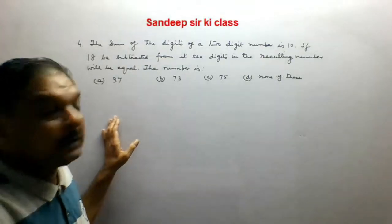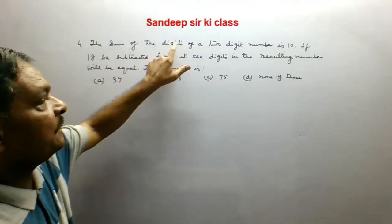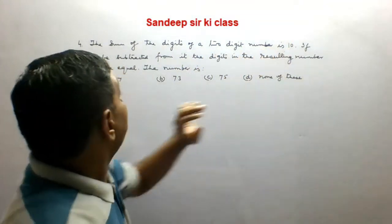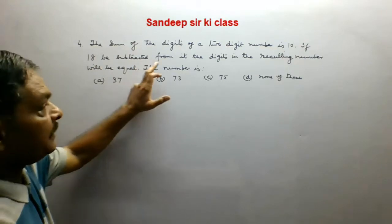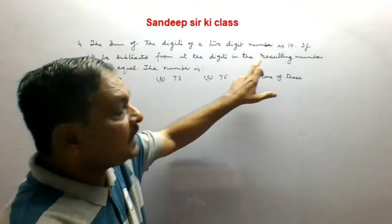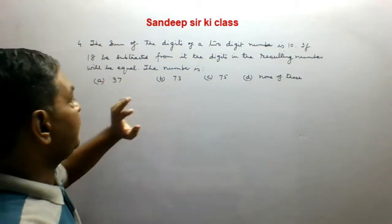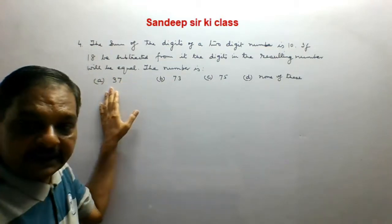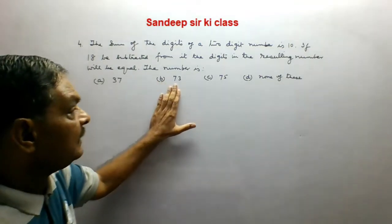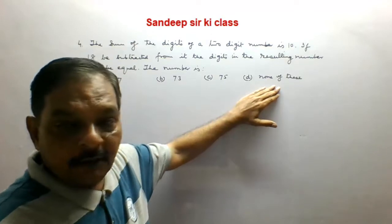Question number 4. The sum of the digits of a two-digit number is 10. If 18 is subtracted from it, the digits in the resulting number will be equal. The number is: Option A is 37, B is 73, C is 75, and D is none of these.